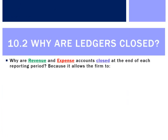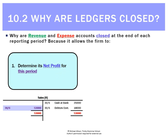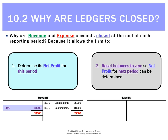Why are ledgers closed? There's a difference between balancing and closing ledgers. Revenues and expense accounts will be closed at the end of the period for two reasons. First, it helps us calculate net profit for this period — for example, sales of $53,000 help us calculate profit. Second, it resets the balance to zero so net profit for next period can be determined, leaving a nice blank sales ledger for the next period.